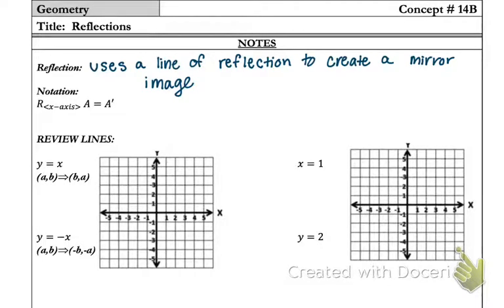So looking at our notation, we have a capital R. You will be seeing that capital R for both reflections and rotations in the next notes. So what you really want to pay attention to is the subscript. So here, my subscript is that x-axis. That means that that is my line of reflection.